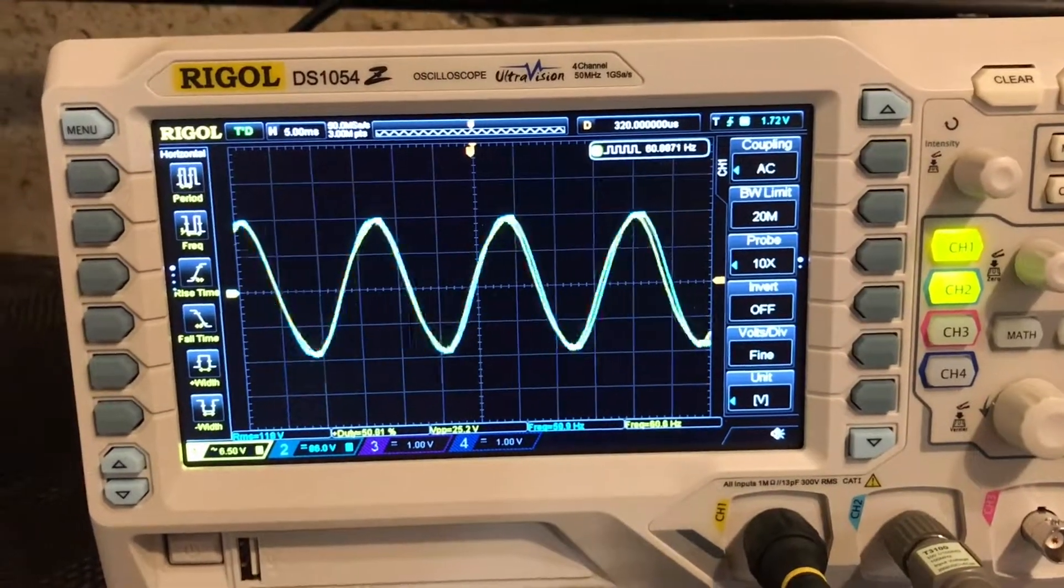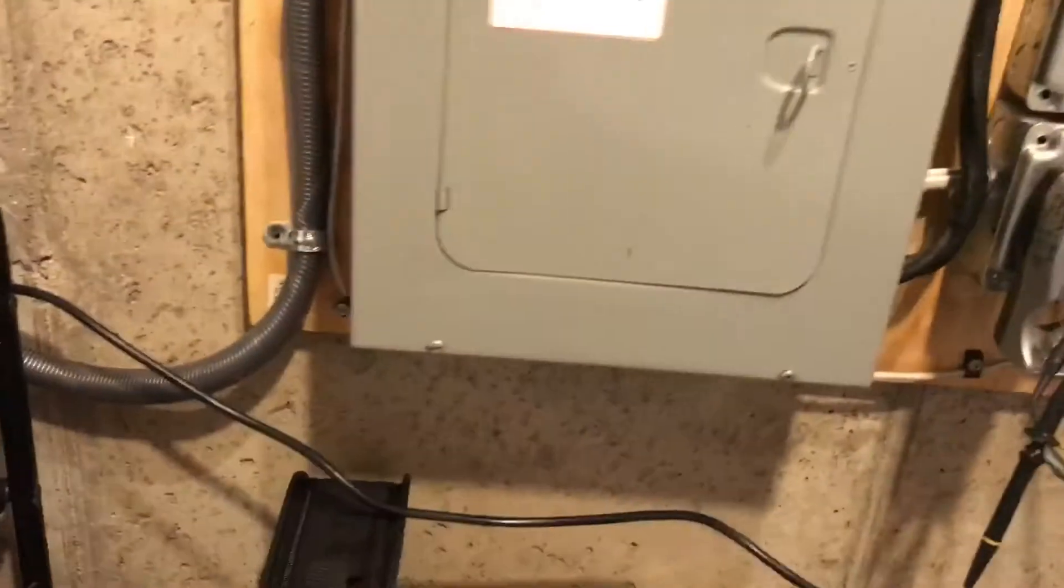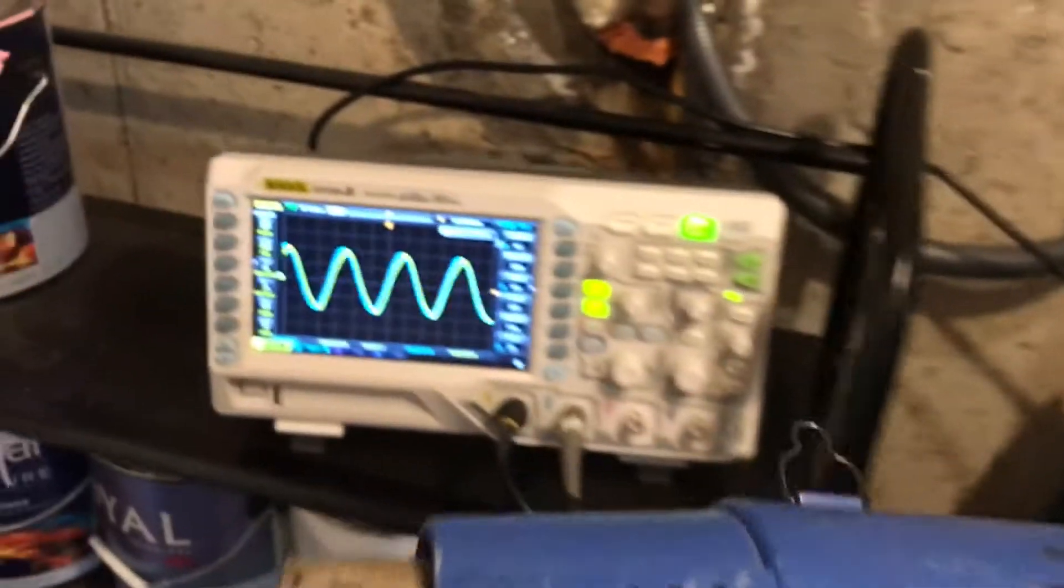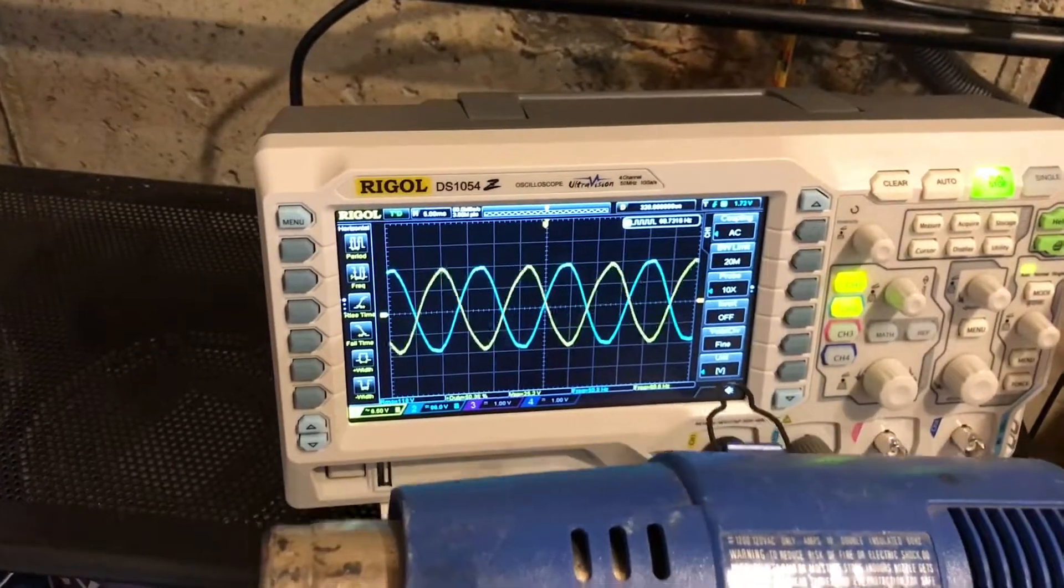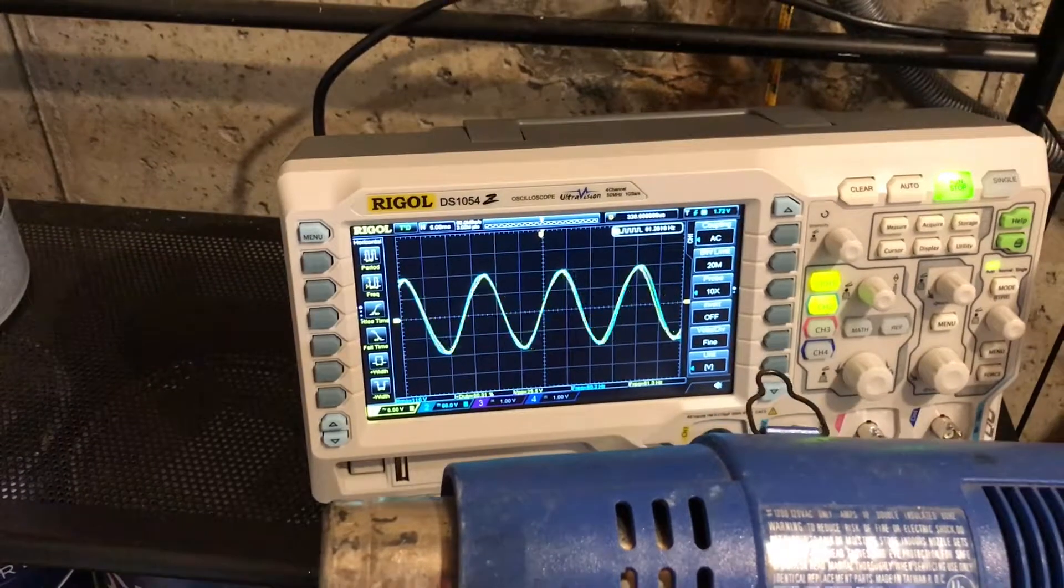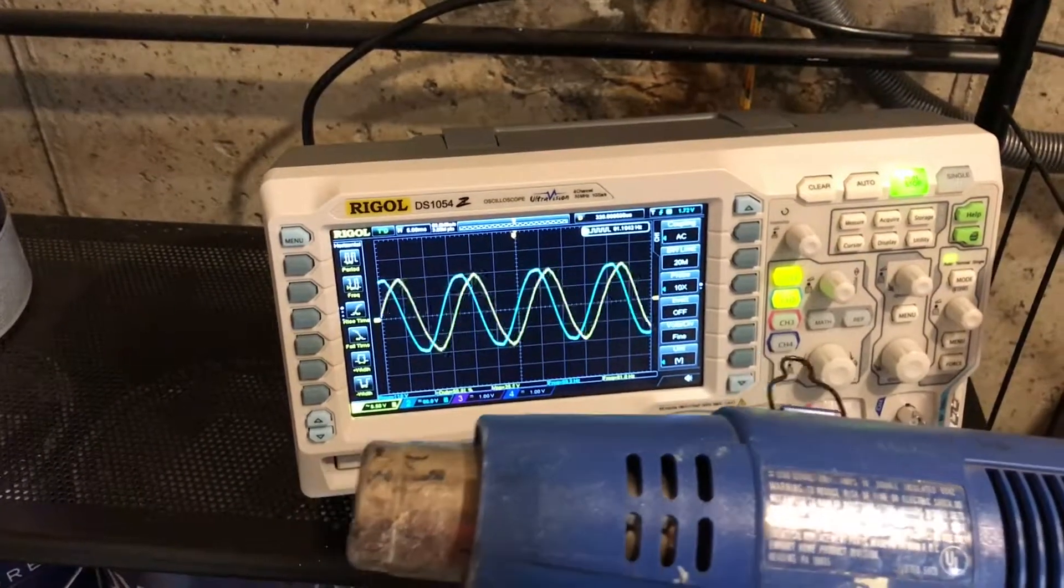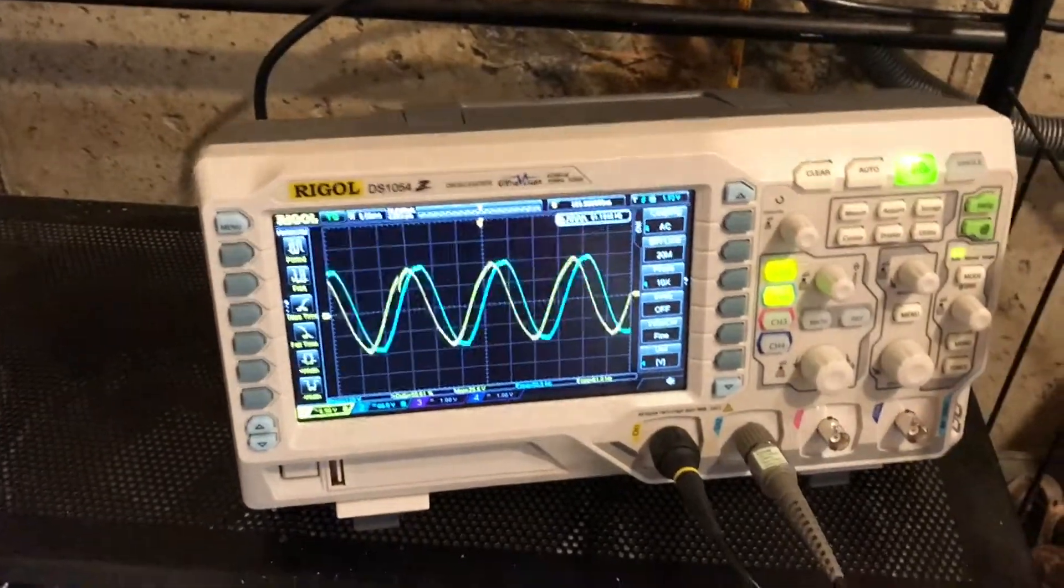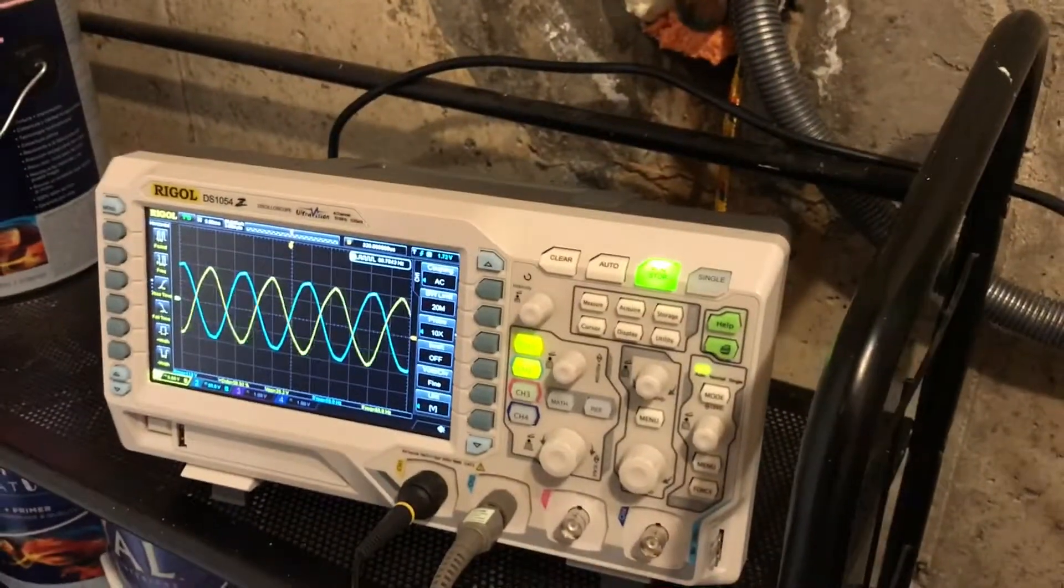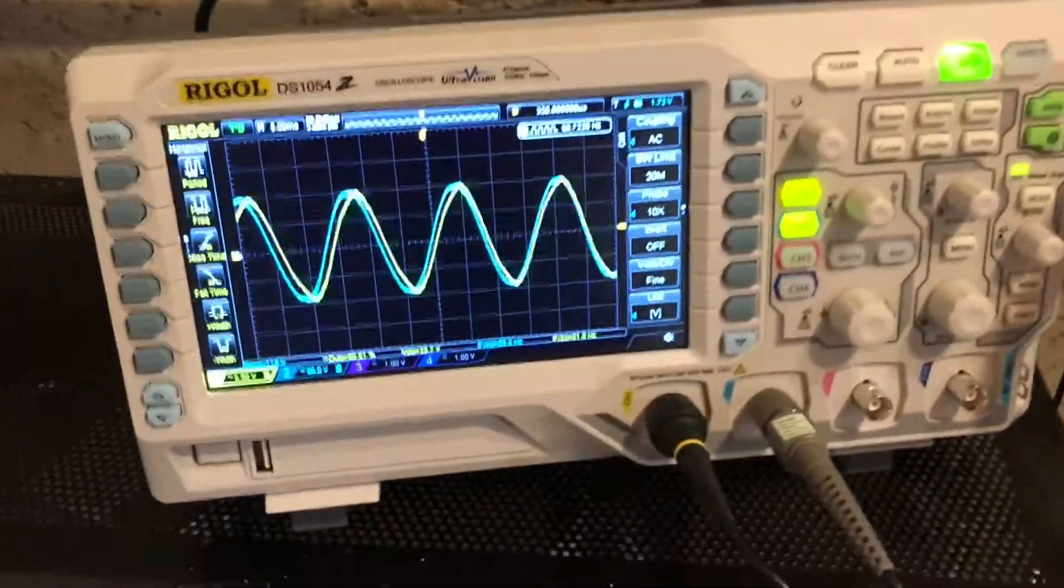You see it actually varies a bit as the load changes on the generator. In fact, I can exacerbate that - I have a heat gun here plugged into one of my generator test outlets. You can see as I turn this on, momentarily it affects it coming in and out of phase with that grid current because it's slowing the generator down a little bit. The governor kicks up, gives a little bit more fuel, and it starts running at the RPM that it was running at originally.